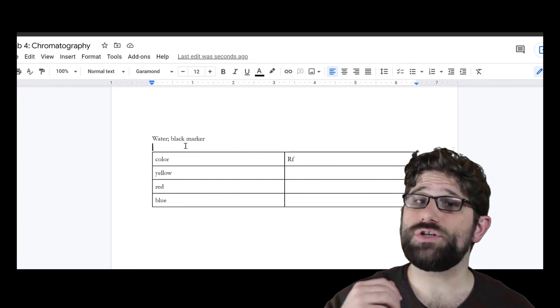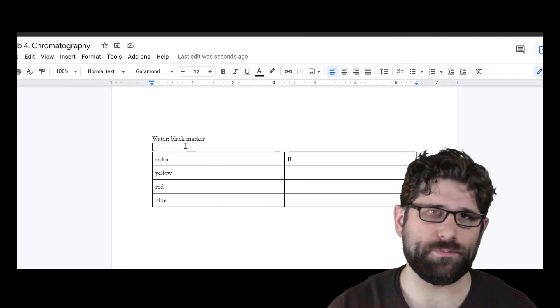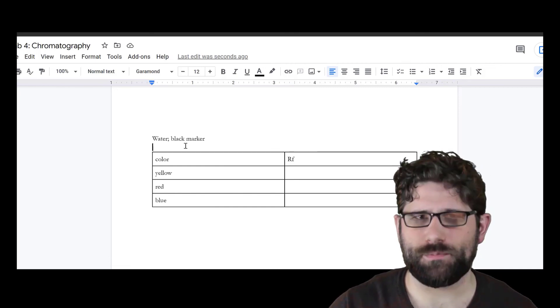That's really all I need for the discussion section. I just need to do this for each solvent and each color. So I should have nine total tables, but the calculations aren't that rigorous. It shouldn't take you too long to put these together.